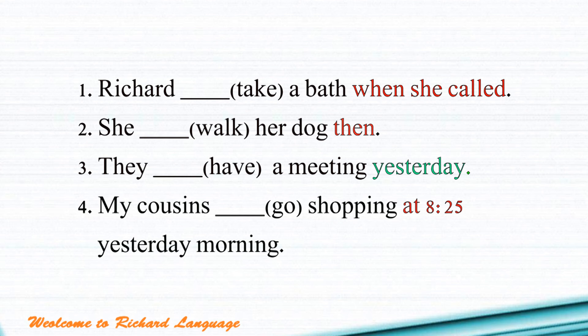For the last question: 'My cousin's ___ shopping at 8:25 yesterday morning.' Here we see both a past time adverb — 'yesterday morning' — and a specific time — 'at 8:25.' Those are the key words. Whenever you see a past time adverb plus a specific time, we use past continuous tense. So the answer is: 'My cousins were going shopping at 8:25 yesterday morning.'